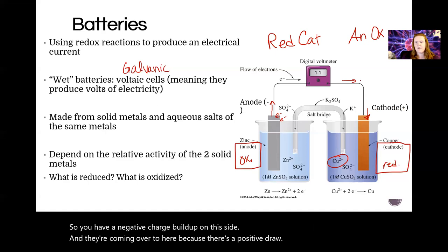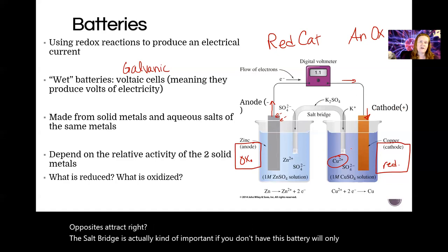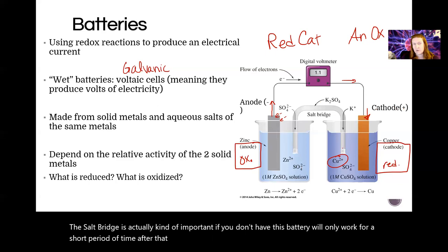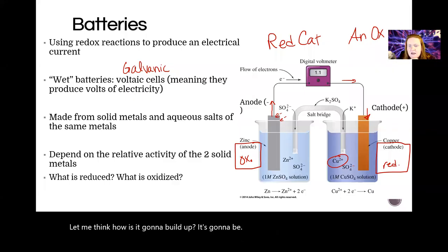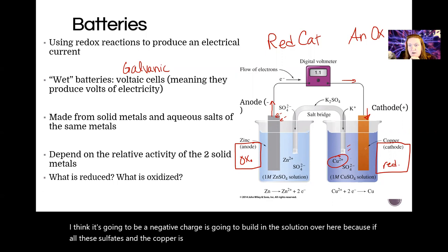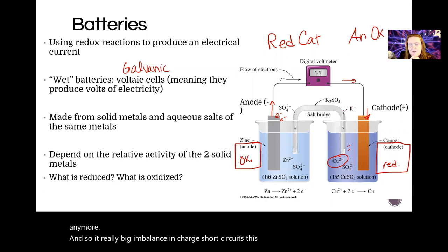Opposites attract, right? Now the salt bridge is actually kind of important. If you don't have it, this battery will only work for a short period of time. After that it shorts out because you end up with the buildup of, let me think how's it going to build up, it's going to be a negative charge is going to build in the solution over here because of all these sulfates and the copper is precipitating so you won't have the plus twos in there anymore. So a really big imbalance in charge short circuits this process. In the salt bridge any salt can be used, this is just an example, but literally any ionic substance can go in here.